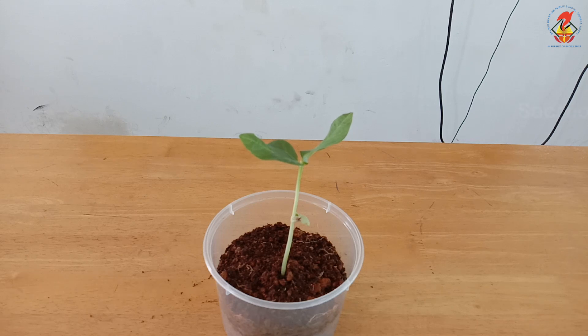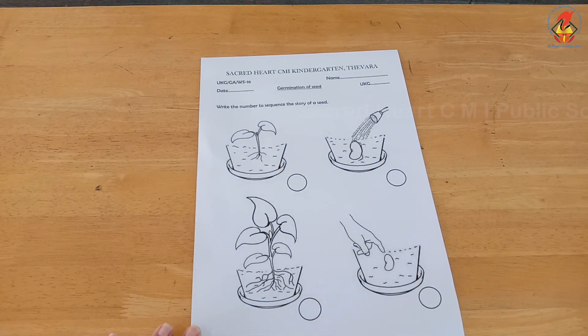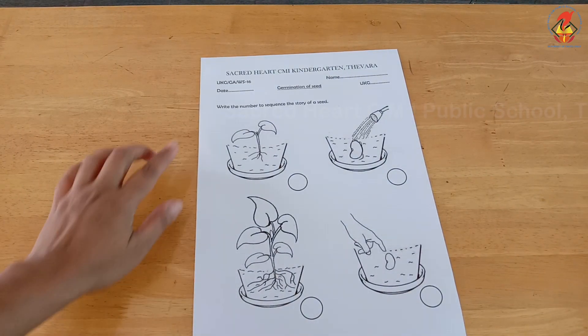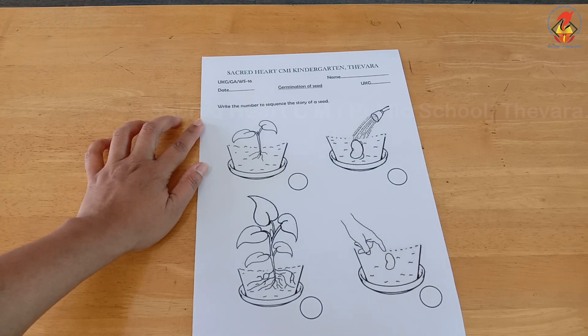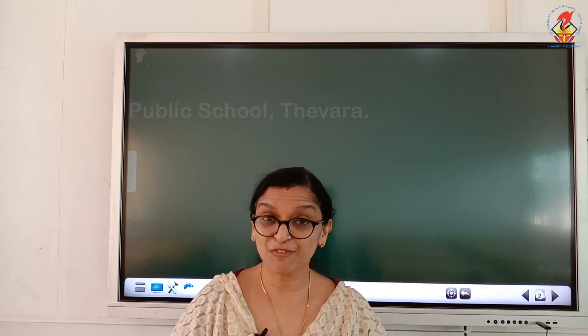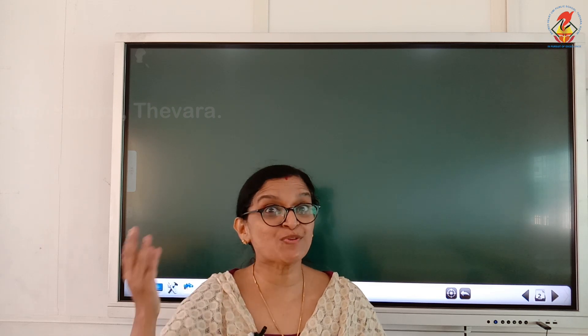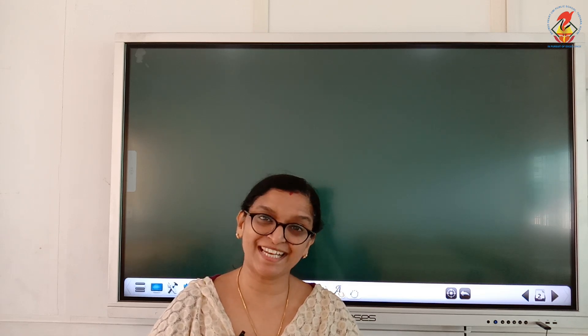Now let us do a worksheet activity based on this. Children, this is the worksheet activity. The question says: write the number to sequence the story of a seed. Children, I hope you understood how a seed grows into a plant. Try to do this activity at home and show your friends in the Google Meet. See you in the next class. Bye!